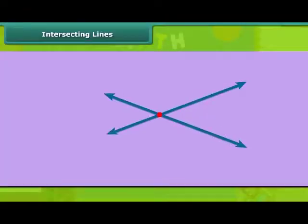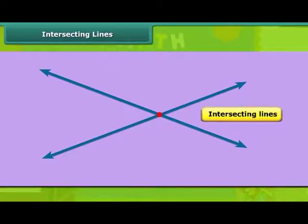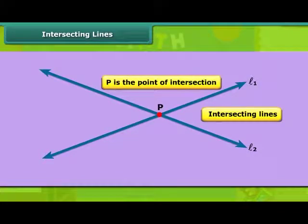Look at the figure. When two lines pass through a single point, we call them intersecting lines. Two lines, L1 and L2, pass through a point P, then L1 and L2 are intersecting lines, and P is the point of intersection.